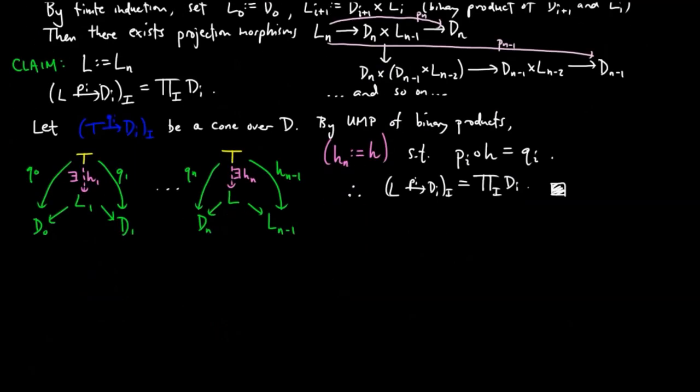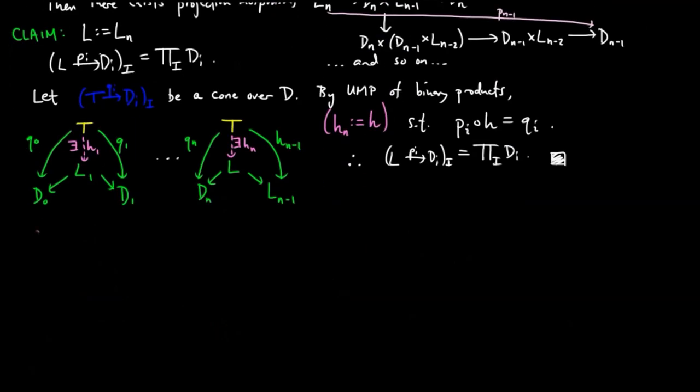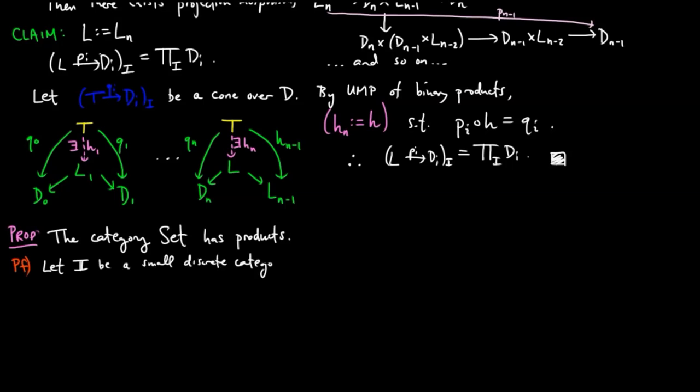We also have that in the category of sets, as given as a model of Zermelo-Fraenkel axioms, has products. For the proof, let I be a small discrete category and D a diagram of shape I in Set.